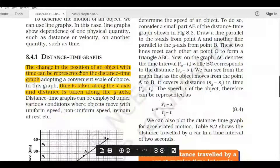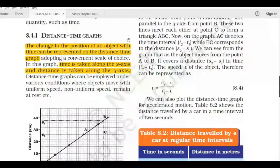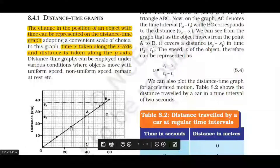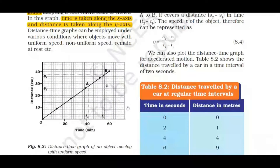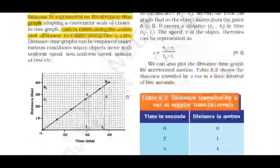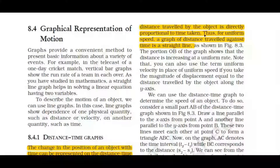The change in the position of an object with time can be represented on a distance-time graph. Time is always taken on the x-axis and distance on the y-axis. A straight line in the graph indicates that the object covers equal distance in equal intervals of time — it moves with uniform speed. It also indicates that the distance traveled is directly proportional to the time taken.